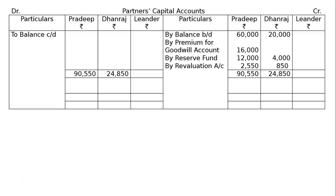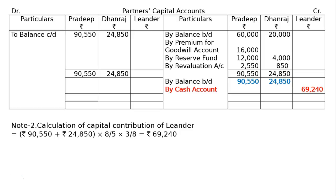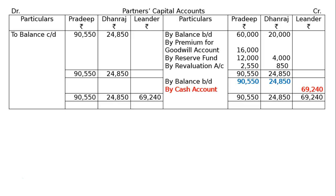Take it to the credit side, write down balance carried down — same amount. By cash account: Lander brings in proportionate capital. Capital of Pradeep and Dhanraj is Rs. 90,550 plus Rs. 24,850 for 5/8 share — make it 8/5 for the whole firm. Lander's share is 3/8, so Rs. 69,240. Balance carried down for all of them, to take to the balance sheet — same balance for all.